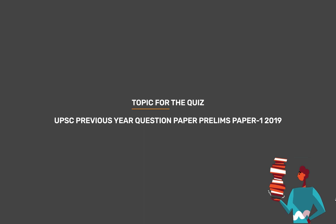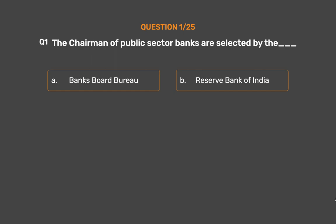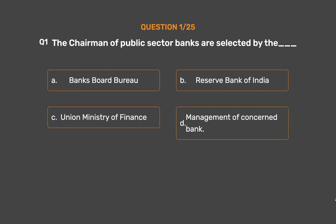Topic for today's quiz is UPSC Previous Year Question Paper, Prelims Paper 1, 2019. Question No. 1: The Chairman of Public Sector Banks are selected by the ___. Option A: Banks Board Bureau. Option B: Reserve Bank of India. Option C: Union Ministry of Finance. Option D: Management of Concern Bank.